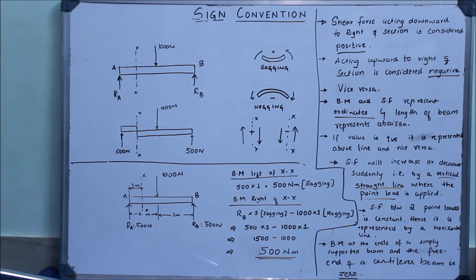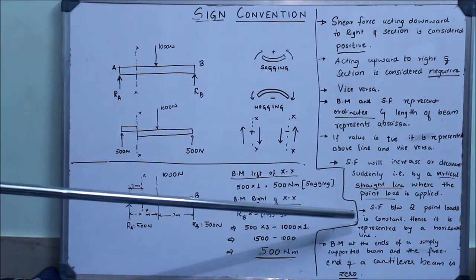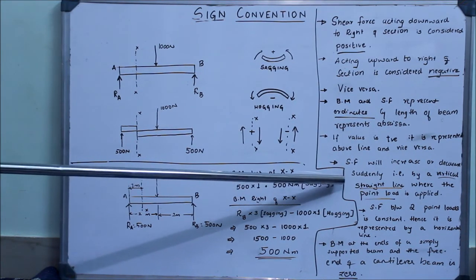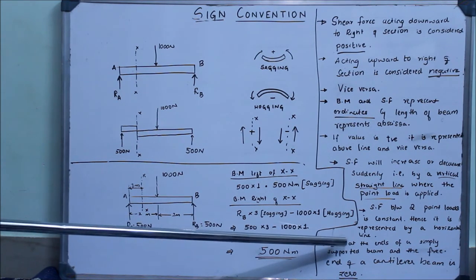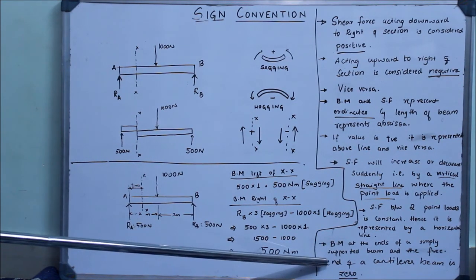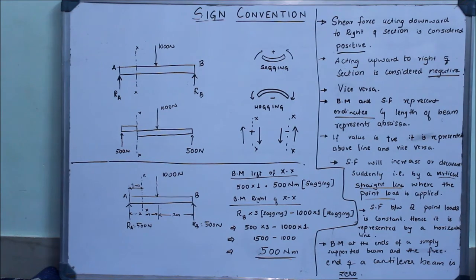That's it for this session where I have talked about the sign conventions that we need to keep in mind when drawing the SFD and BMD. These are very important sign conventions, along with the salient points: shear force at a point load is represented by a vertical straight line; shear force between two point loads is constant and represented by a horizontal line; and bending moment at the ends of a simply supported beam and the free end of a cantilever beam is zero. In the next video I will derive a few shear force and bending moment equations. See you in the next video!